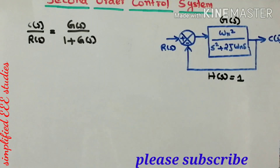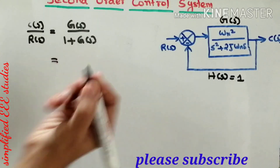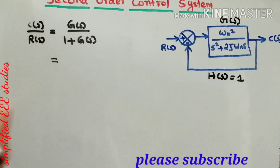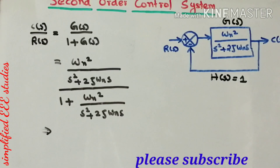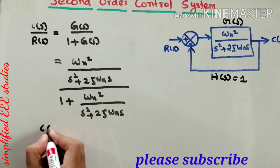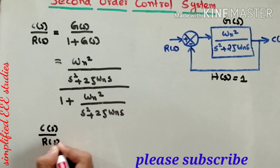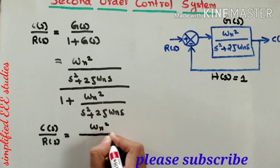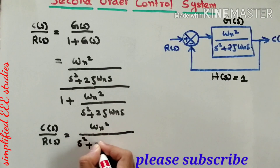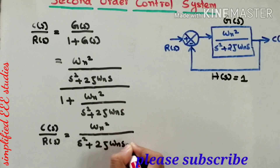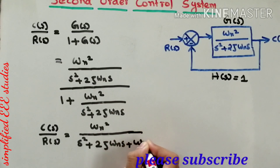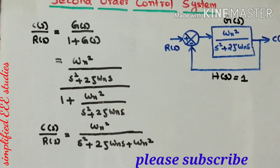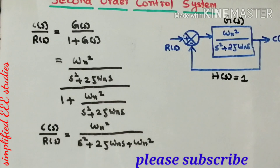Now substitute the value of G into the formula. After substituting and simplifying, you will get C(s) divided by R(s), which is the standard transfer function of the second-order control system.